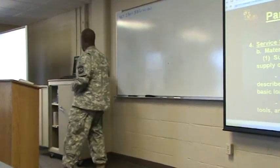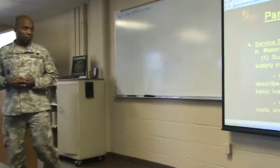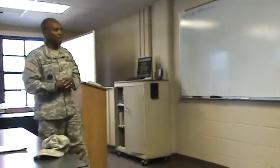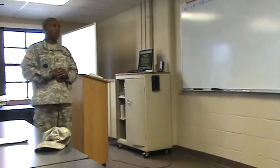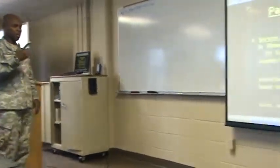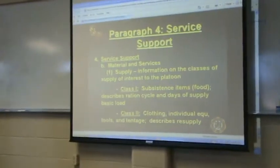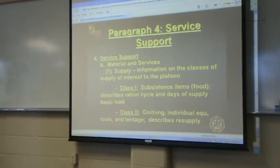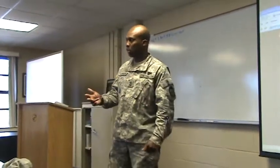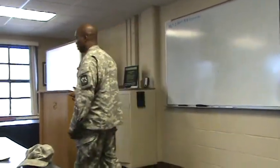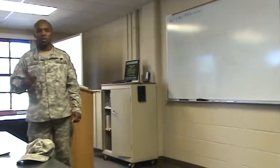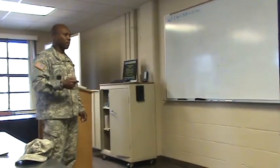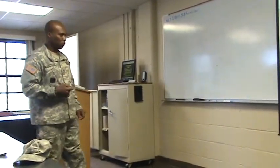Under your services and support, you've got materials and services. First, supply: the information on classes of supply of interest to the platoon. Under class 1, there are subsistence items such as food and water. You just come over the radio and tell your platoon sergeant, platoon leader, or supply sergeant, 'I need class 1 at my location.' Give a grid coordinate or a designated point for drop-off.